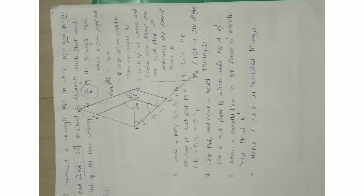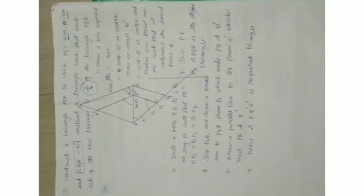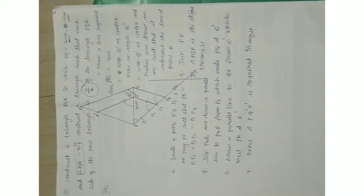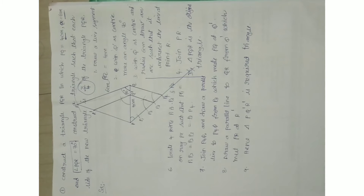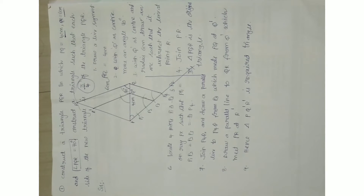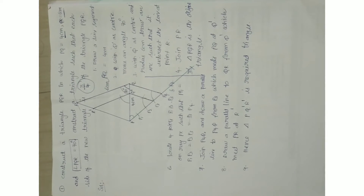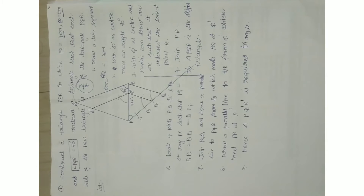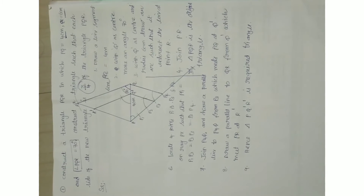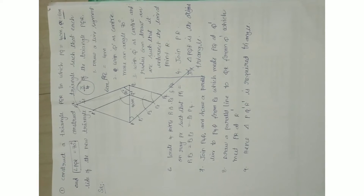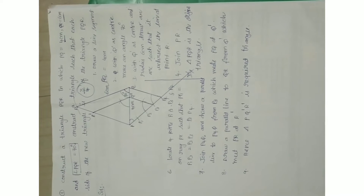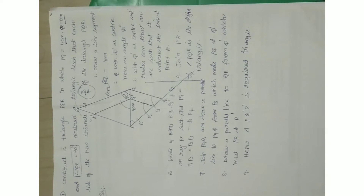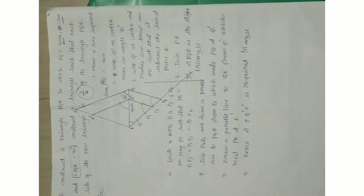One more important question: construct a triangle PQR in which PQ = 4 cm, QR = 6 cm, and angle PQR = 70°. Two sides and one angle are given. You need to know how to construct the triangle; everything else is straightforward.